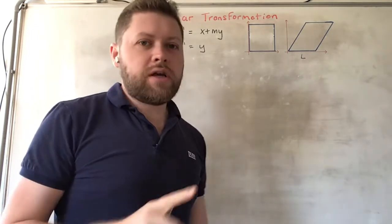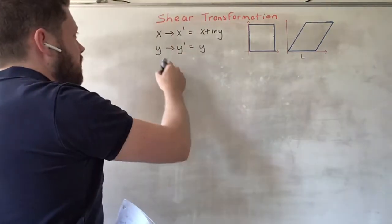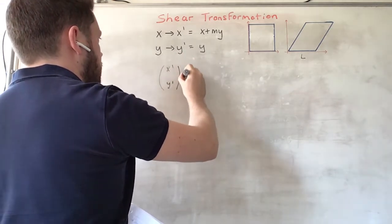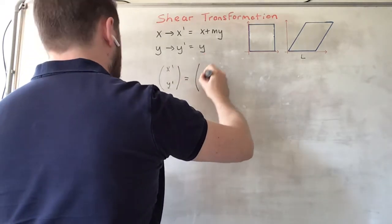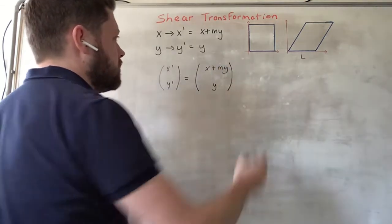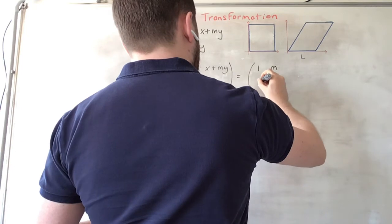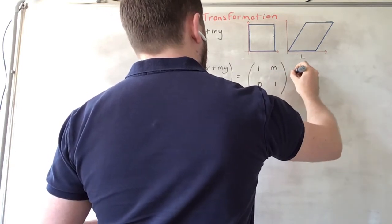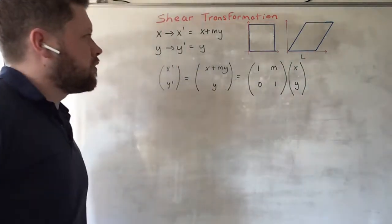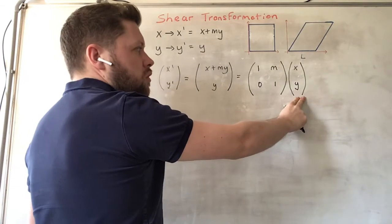So y is unchanged and the fixed line is the x-axis. We can write the transformation here like this: x dash, y dash equals x plus my, which is the same thing as 1, m, 0, 1 times x, y. So the new coordinates are the old coordinates transformed by this matrix here, which is the shear transformation matrix.